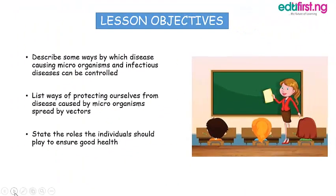Lesson objectives. At the end of the lesson, you should be able to: describe some ways by which disease-causing microorganisms and infectious diseases can be controlled; list ways of protecting ourselves from disease caused by microorganisms spread by vectors; and state the roles the individual should play to ensure good health.